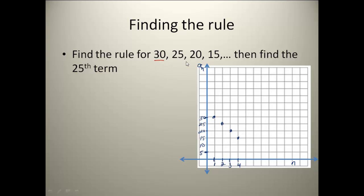You can ask yourself, what do I have to do to 30 to get 25? That would be minus 5. What do I do to 25 to get to 20? Minus 5. What do I do to 20 to get to 15? Minus 5. Notice every time I got the same value, minus 5, that's my common difference.